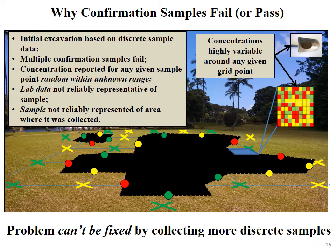You do your excavation, think you have it all, go back and collect confirmation samples — and probably not surprisingly if you've been doing this a long time, some of the confirmation samples fail. So you go out and dig a little bit more, collect more confirmation samples — this can go on and on through multiple rounds. If you could zoom in on any particular spot where you're collecting a discrete confirmation sample and could see the contaminant concentrations in detail, you'd see it could be totally random within a potentially broad range. Move it over an inch, you get a completely different number; same thing within the sample itself — testing it multiple times can give you a completely different number. This small-scale variability and randomness can't be fixed by collecting more and more discrete samples — you just dig yourself deeper into the rabbit hole.